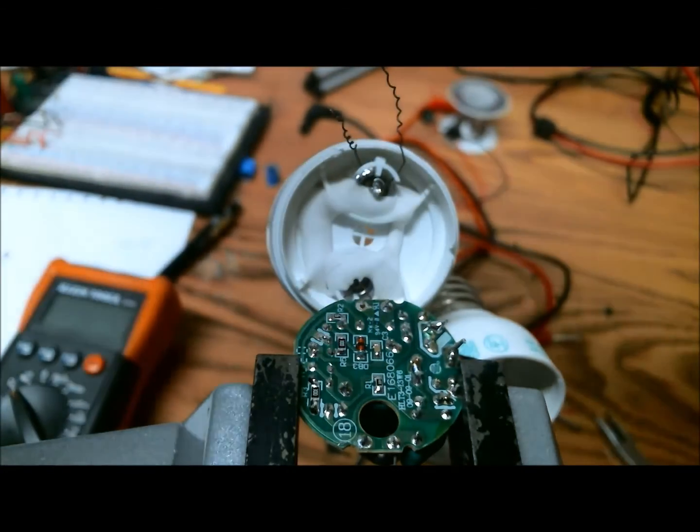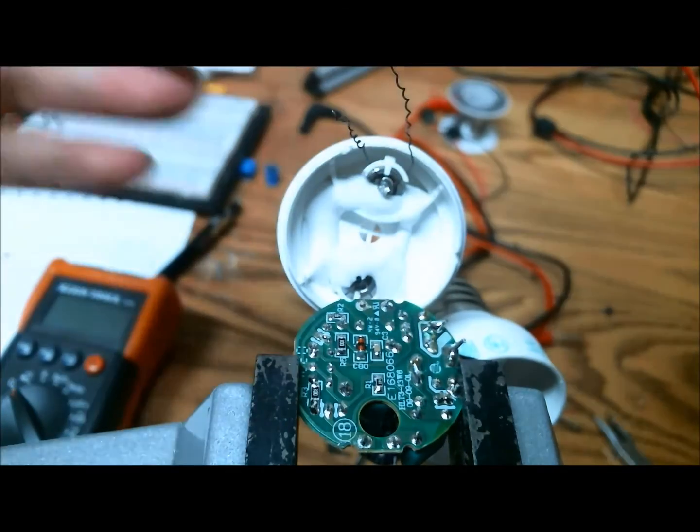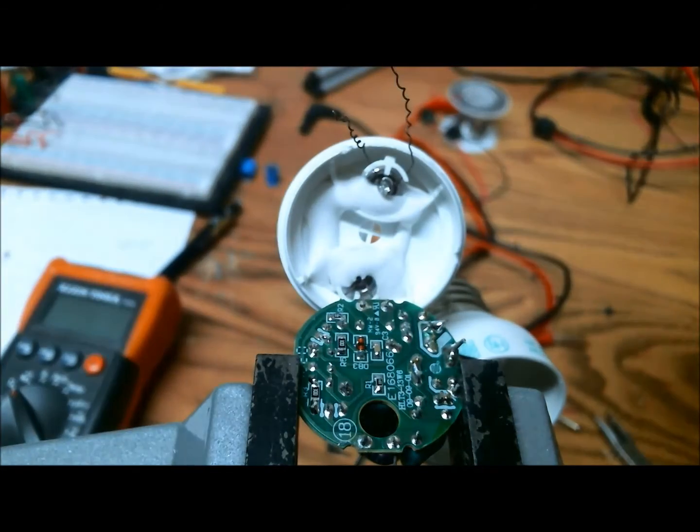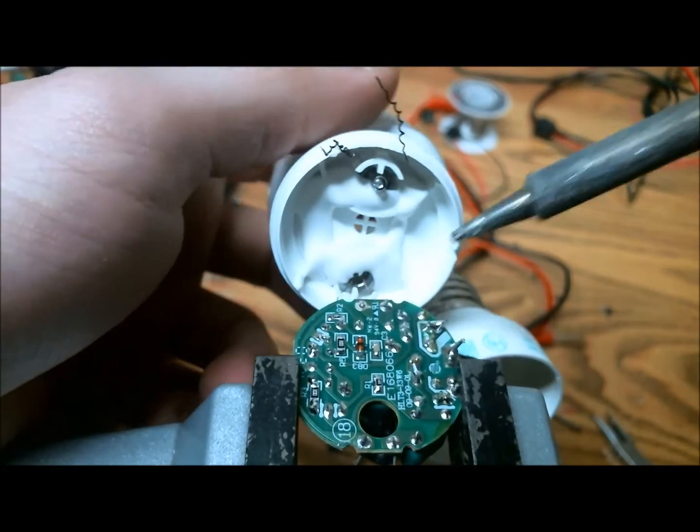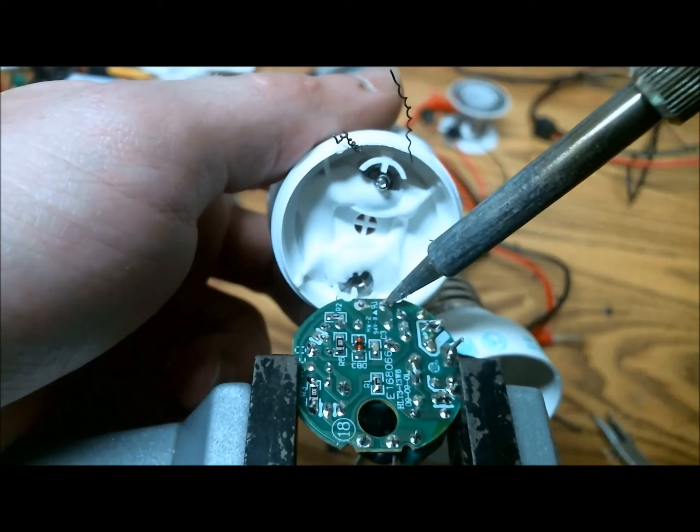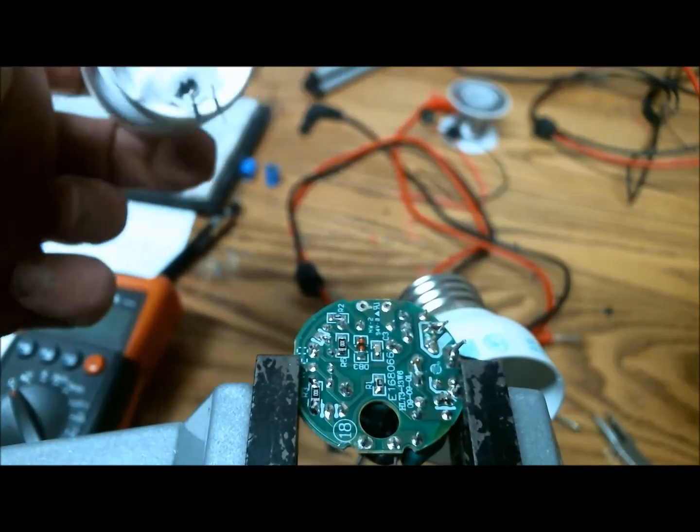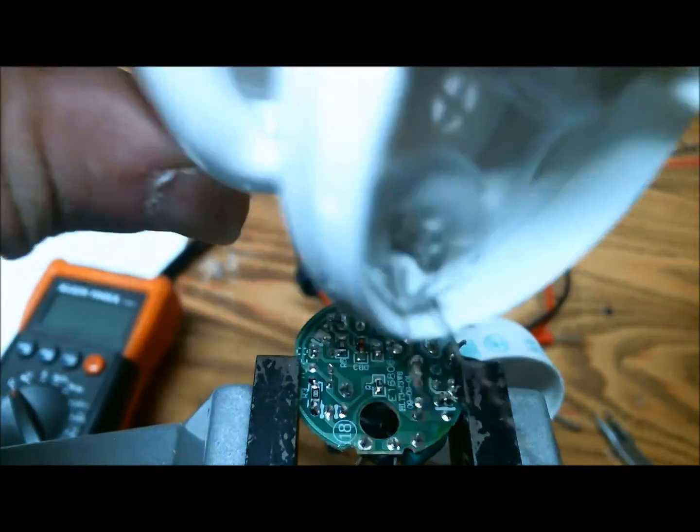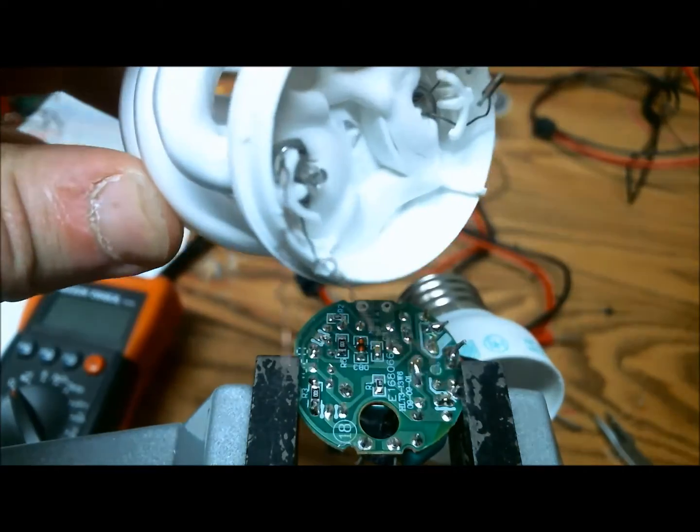And now I want to be careful because as soon as this other one comes out, the lamp is going to fall onto the bench, and it may break, so you need to hold it with one hand. Okay, there we go. Now the part containing mercury has completely been removed from the circuit.